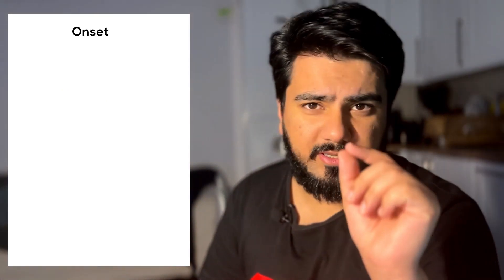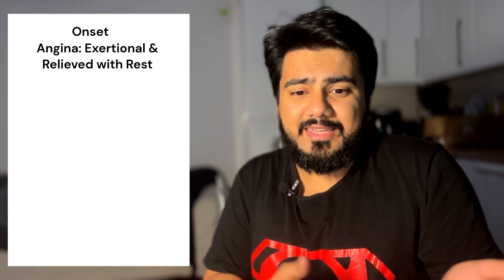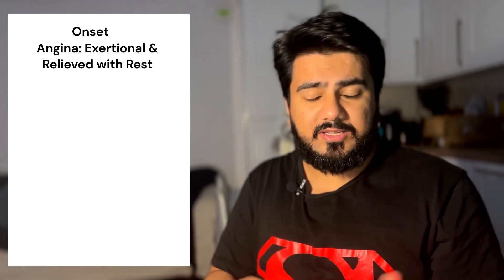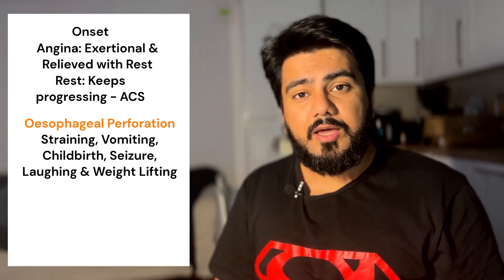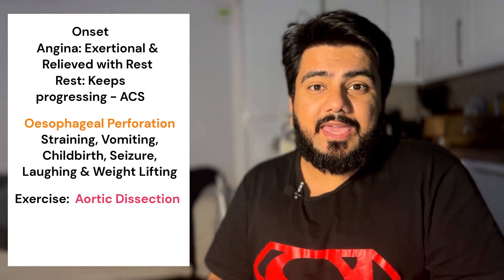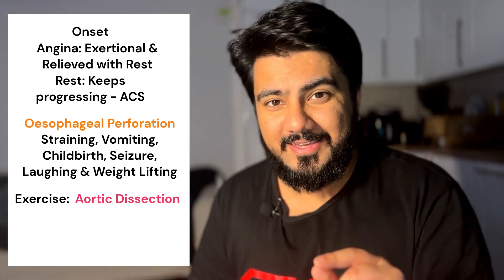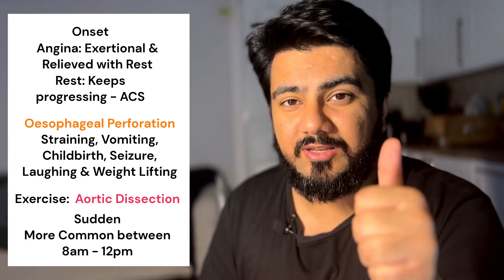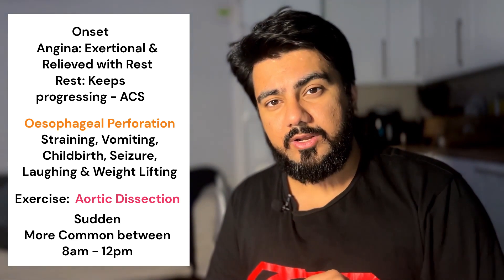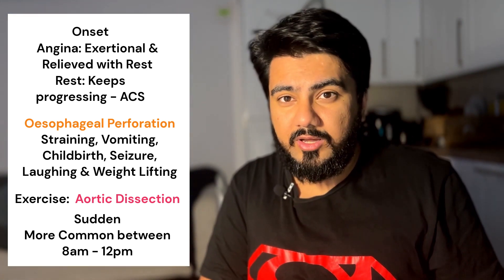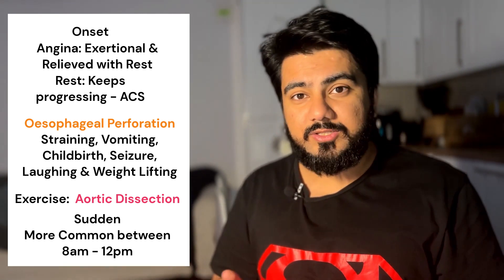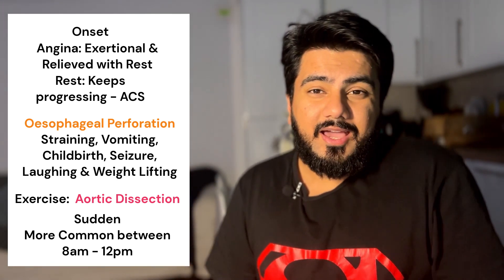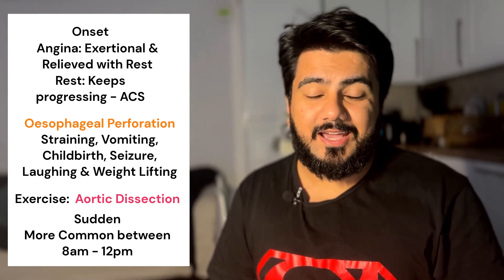The second thing to talk about is the onset of the pain. Pain during exertion that abates with rest can be a symptom of angina. Pain happening more at rest that keeps progressing can indicate acute coronary syndrome. Pain from esophageal perforation can be due to straining, vomiting, a bout of laughter, during childbirth, during a seizure, or even weightlifting. Pain that is maximal at onset in young patients can indicate acute aortic dissection. Notably, aortic dissection onset is extremely sudden and is more common in the early hours of the morning, from 8am to 12pm, in line with diurnal blood pressure variations.